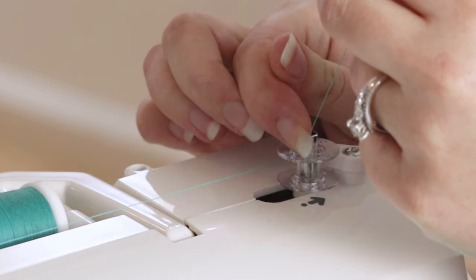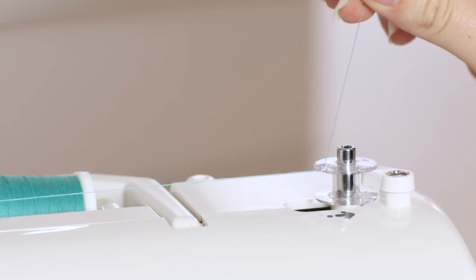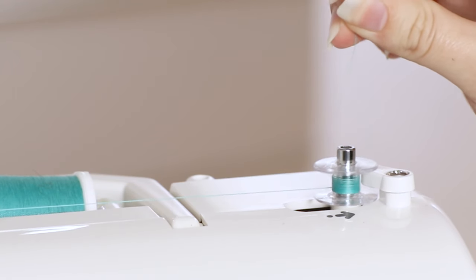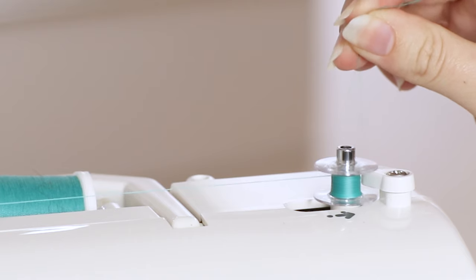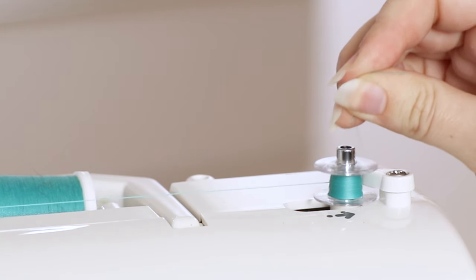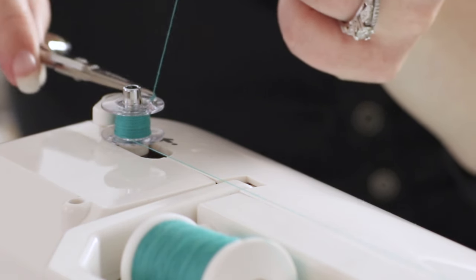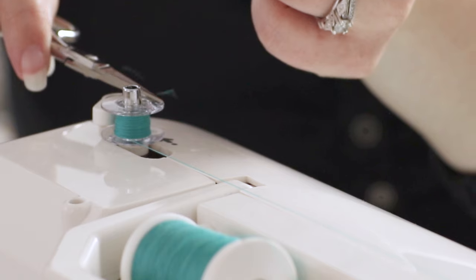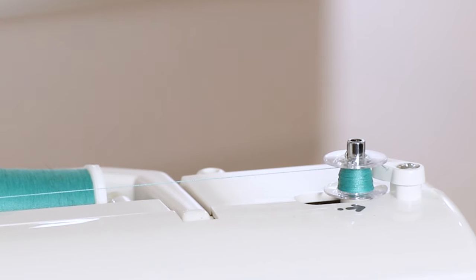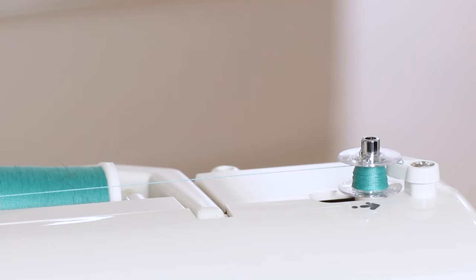Move the spindle over to the right and press the foot control to begin winding. Once the thread tail is buried, clip the tail flush with the top of the bobbin, then continue winding until the bobbin is full or until you have enough thread for your project.